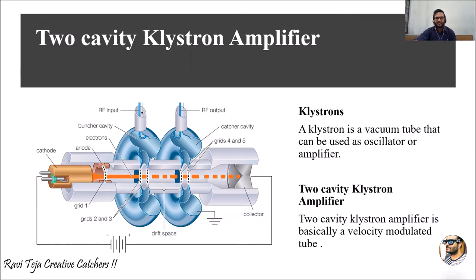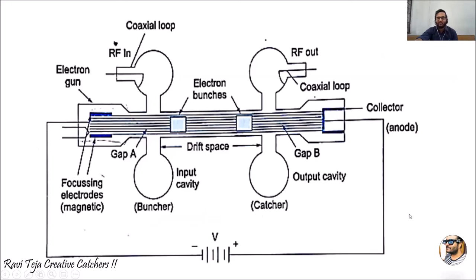This two-cavity klystron amplifier is basically a velocity modulated tube. We need to understand what those two cavities are, how they are fixed to the klystron amplifier, how the signal is getting strengthened, and how this tube uses velocity modulation. What you are seeing here is a simplified diagram of a two-cavity klystron amplifier. This rectangular part is a glass tube, also called a klystron tube or vacuum tube, which based on the application can be used either as an oscillator or as an amplifier.